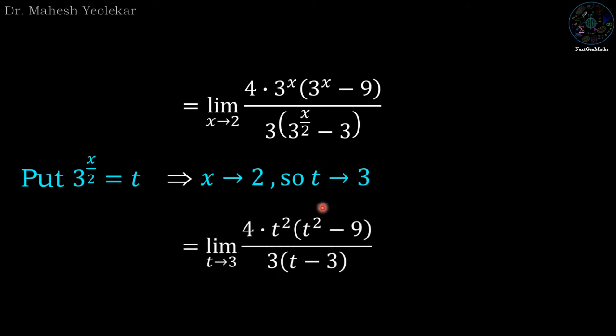Then limit t approaches 3: 4·3^x will be t squared, so t squared minus 9 divided by t minus 3.